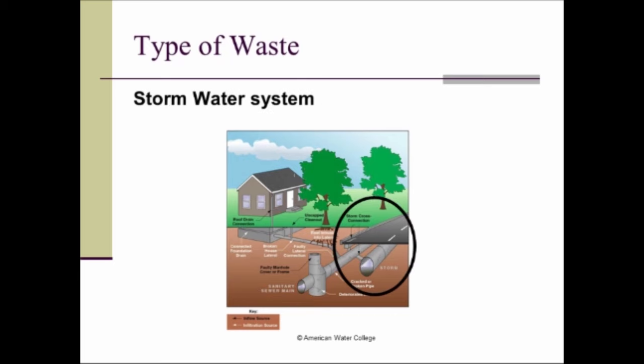The stormwater system collects water from street runoff, surface runoff, and rain events. The stormwater system sends all of its flow directly to a natural waterway or natural water course and does not receive any treatment at all. The key difference is that the sanitary system conveys wastewater to be treated at the wastewater treatment plant, while the stormwater system directs all surface runoff to a natural waterway.